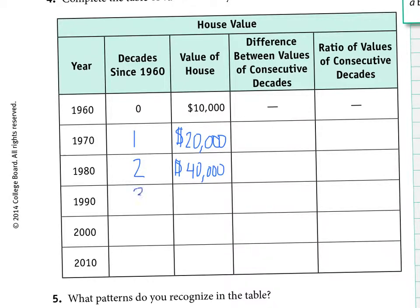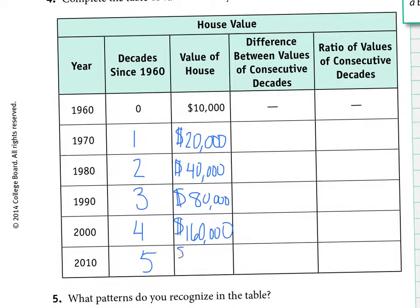The trend continues — the value keeps doubling each decade. In decade three (1990) it should be $80,000. Decade four (2000) should be $160,000. And decade five (2010) should be $320,000. So that is what the value of the home will be each decade.